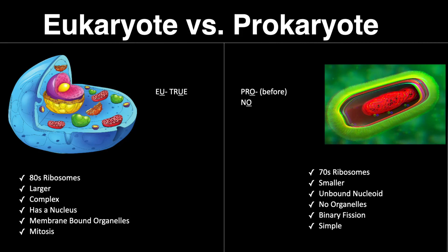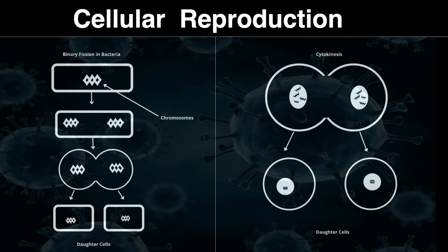Now we have eukaryote cells versus prokaryote cells. Eukaryote cells are larger, more complicated, have a nucleus and membrane-bound organelles, reproduce by mitosis and sometimes meiosis, and their ribosomes are 80S in size. Prokaryotes are much smaller, less complicated, simple, have an unbound nucleoid — like a half nucleus — ribosomes that are 70S in size, and they reproduce by binary fission. Most bacteria reproduce by binary fission: starting with one set of chromosomes and splitting into two daughter cells. This process is called cytokinesis — kinesis means action or movement.